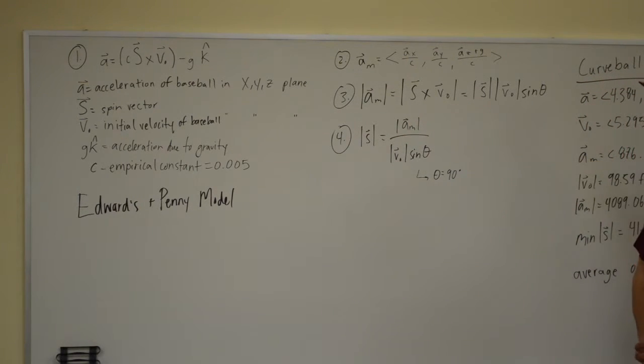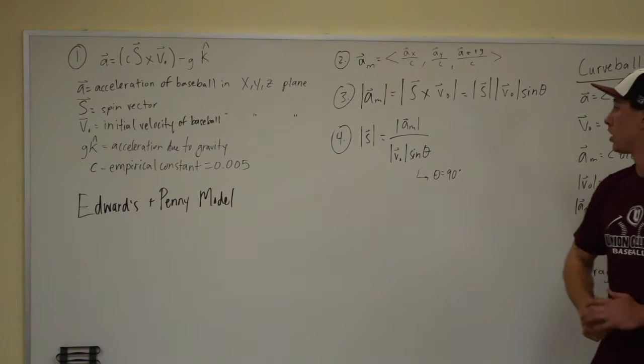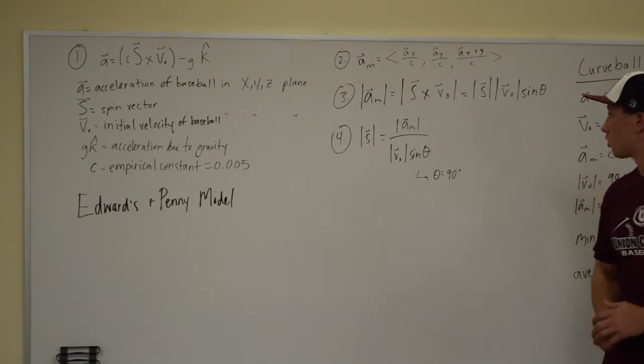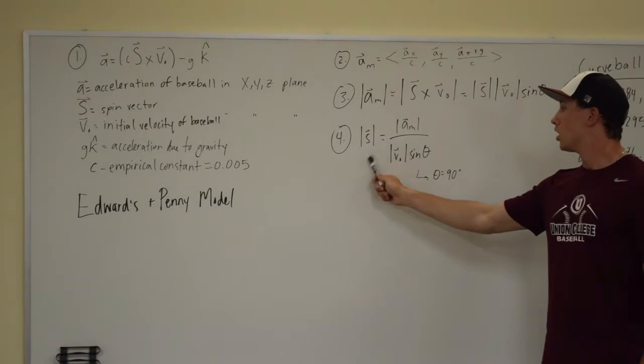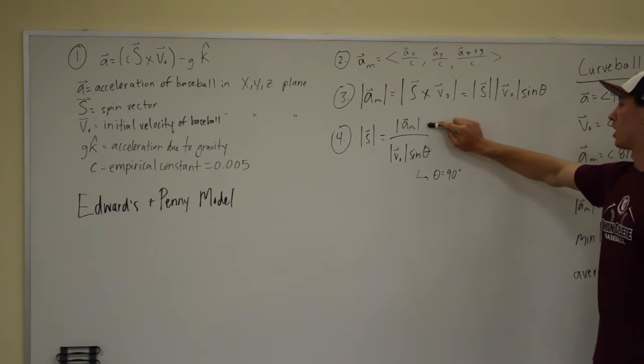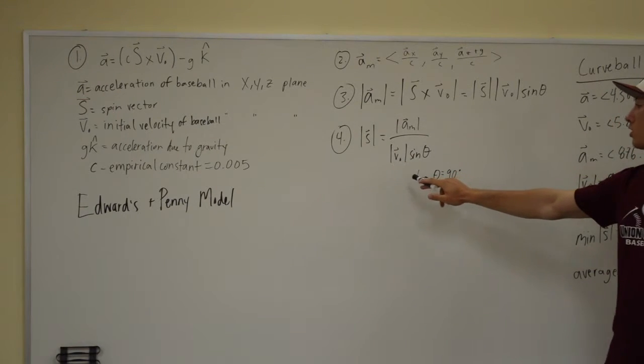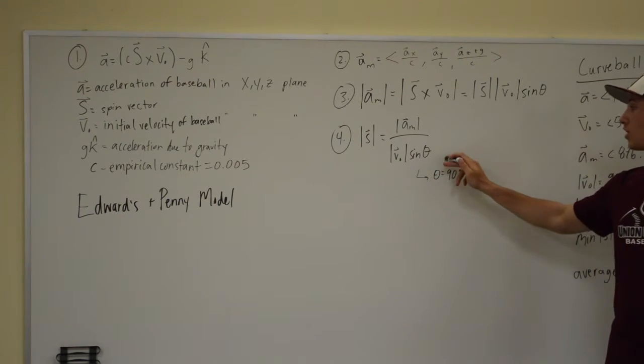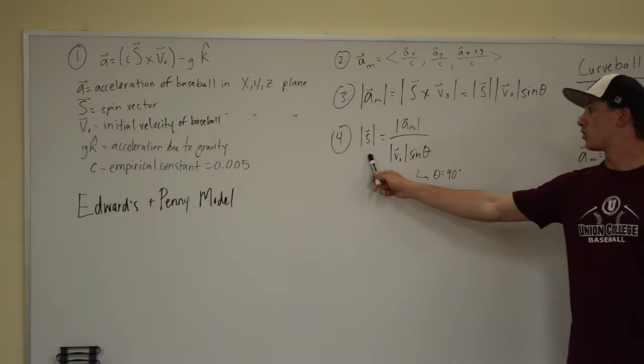That leaves us with the equation that the modified acceleration is equal to the spin vector crossed with the initial velocity. And the cross product simply is just the magnitude of the spin vector times the magnitude of the initial velocity times the sine of theta. Then solving for this equation gives us the magnitude of the spin vector is equal to the magnitude of the modified acceleration over the magnitude of the initial velocity times sine theta. And what this is going to be is our angular velocity of the baseball given in revolutions per second.